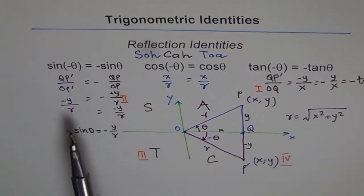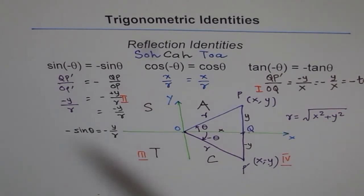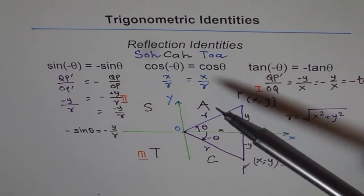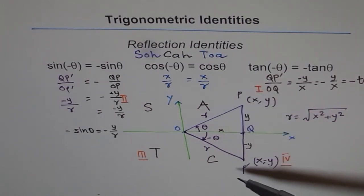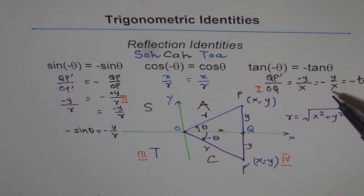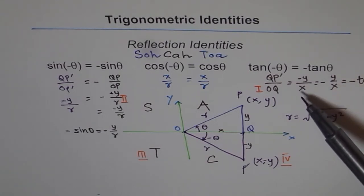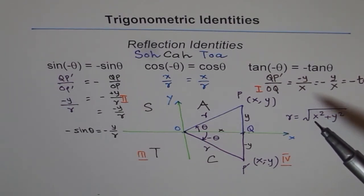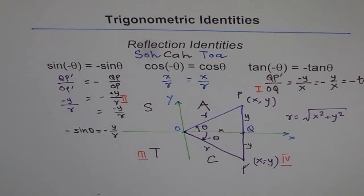So I have proved all three identities in different ways: sin(−θ) = −sin θ by comparing two reflected triangles; cos(−θ) = cos θ using the CAST rule showing cosine is positive in both quadrants 1 and 4; and tan(−θ) = −tan θ using coordinates y over x. Using coordinates is one of the most effective ways to prove identities. I hope you remember the reflection identities — sin(−θ) = −sin θ, cos(−θ) = cos θ, and tan(−θ) = −tan θ — and how they correlate with the CAST rule. Thank you.